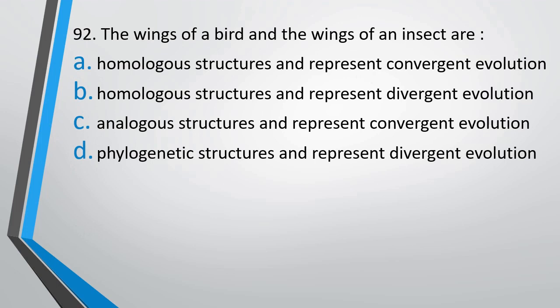Question number 92. The wings of a bird and wings of an insect are: (A) homologous structures representing convergent evolution, (B) homologous structures representing divergent evolution, (C) analogous structures representing convergent evolution, or (D) phylogenetic structures representing divergent evolution. The correct answer is option C — both are analogous structures and they represent convergent evolution.